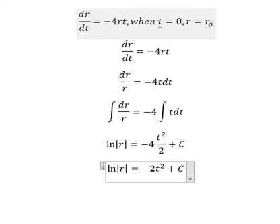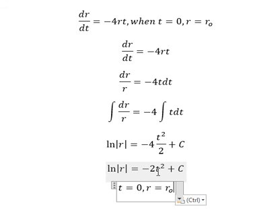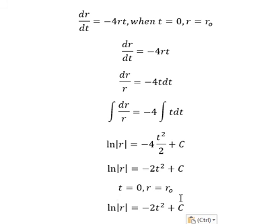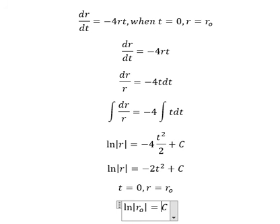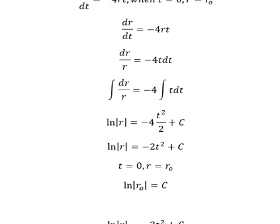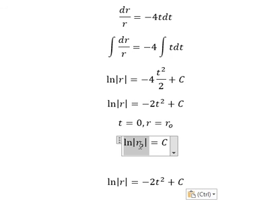Now we have the conditions, so we put number zero in here. That means we have c equals to this value. So we put this value back in here.